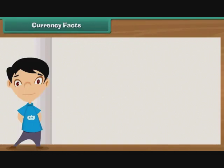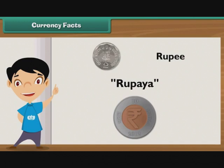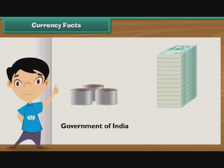Currency facts. The Indian currency is known as the rupee. The word rupee comes from the Sanskrit word 'rupaya', which denoted the stamped coins used in ancient India. This symbol is associated with the Indian rupee. Indian currency is made up of coins and notes known as banknotes. While the coins are minted by the Government of India, the banknotes are issued by the Reserve Bank of India (RBI).